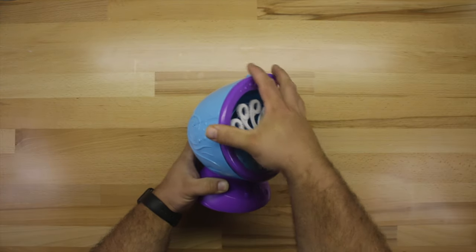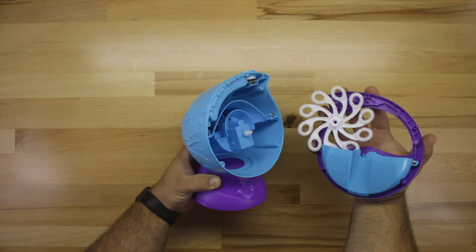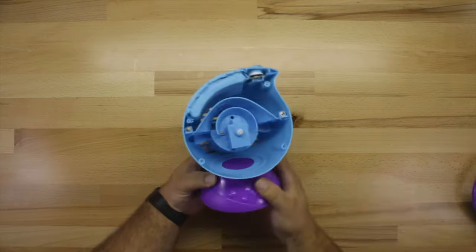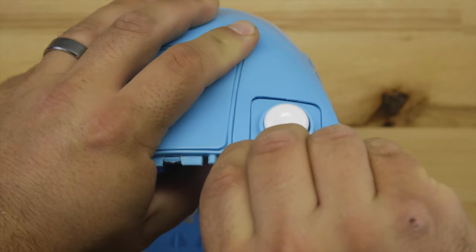Once all four screws are removed, you can go ahead and lift the top of the toy off, exposing the fan, the battery compartment, and the switch.